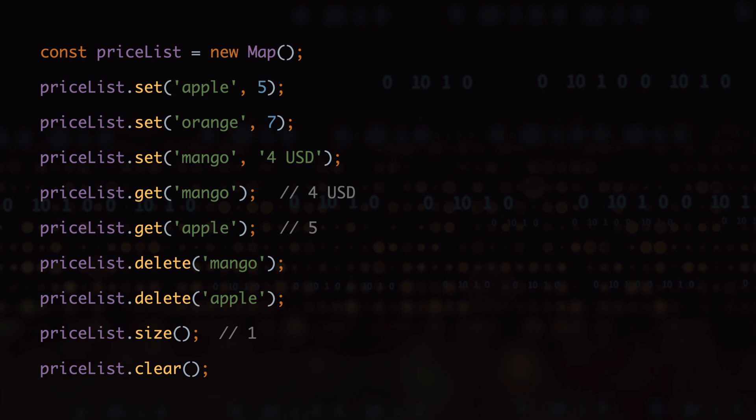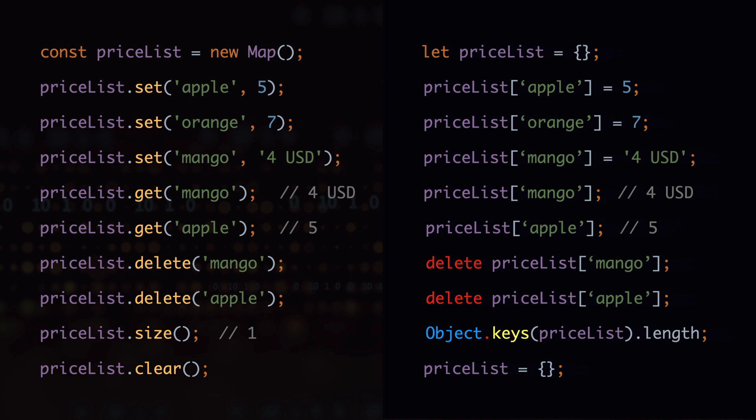The complexity of all these hash table operations is going to be constant, which means that no matter how many items we have in the hash table, it is always going to take the same amount of time. In JavaScript we can also create hash tables using the object notation, so we can rewrite this hash table implementation using an empty object, dot notation to set and get the values, and the delete keyword to delete the values from the hash table.